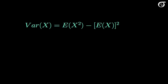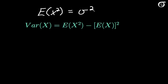We'll see that in this proof we'll need the expectation of x squared. Rearranging the variance relationship, the expectation of x squared equals the variance of x, which is sigma squared, plus the square of the expectation of x, which is mu squared.